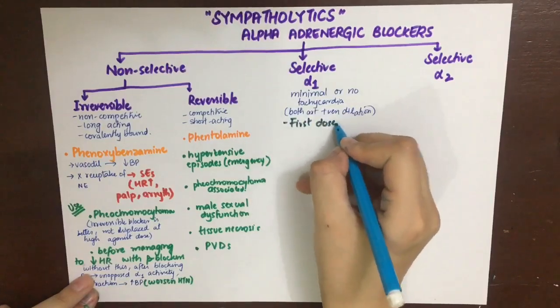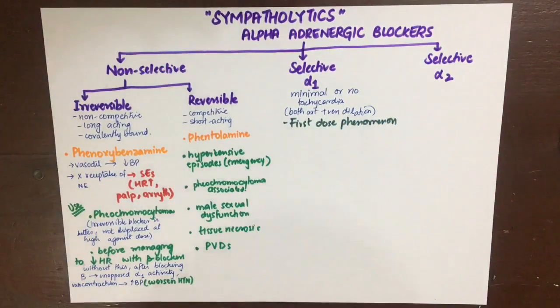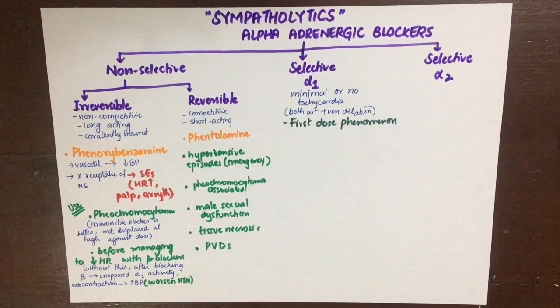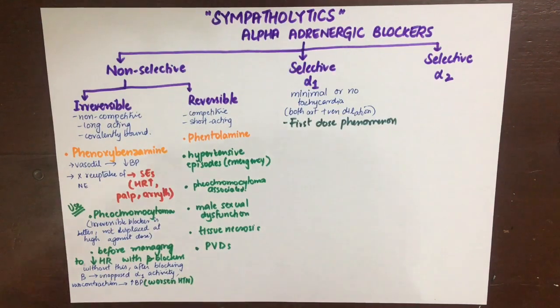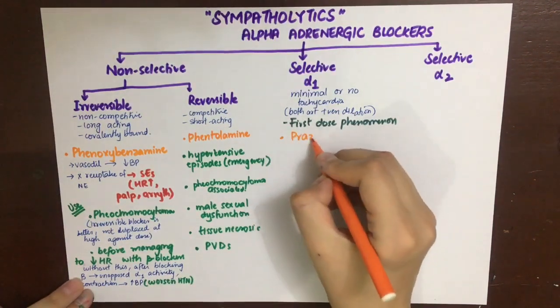An important phenomenon to remember for selective alpha-1 blockers is the first-dose phenomenon. This occurs because alpha-1 blockade causes postural hypotension. Patients must be warned to take the first dose at bedtime while lying down, as it can cause hypotension, decreased cerebral blood flow, and syncope, potentially leading to falls and injuries.